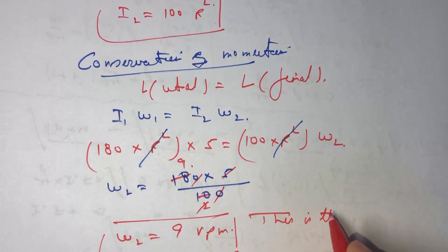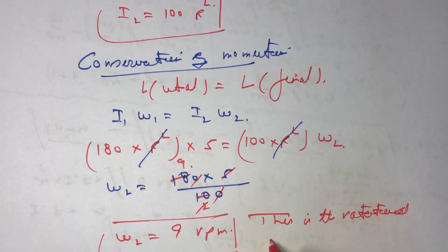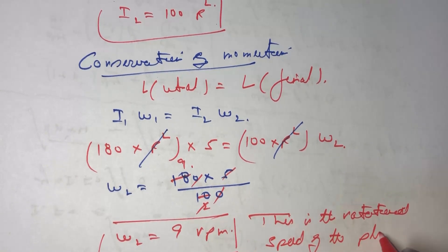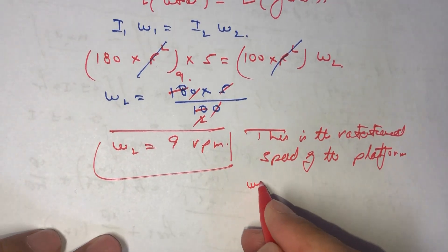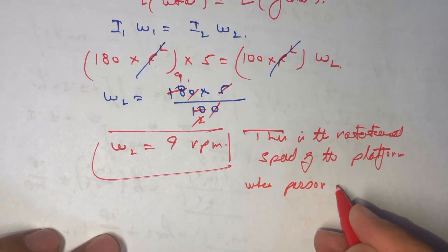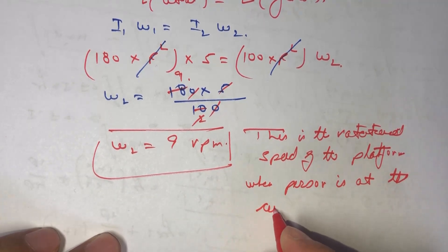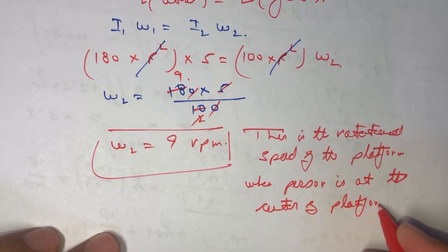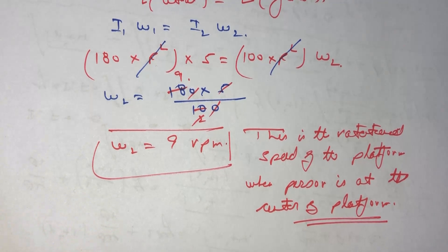So the rotational speed of the platform when the person is at the center of the platform is 9 RPM. This completes the question. Thank you.